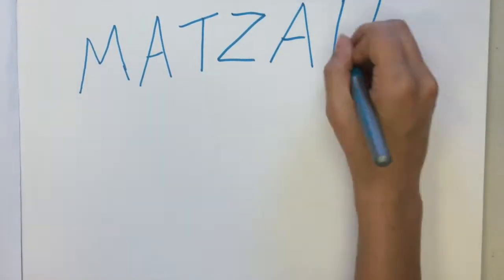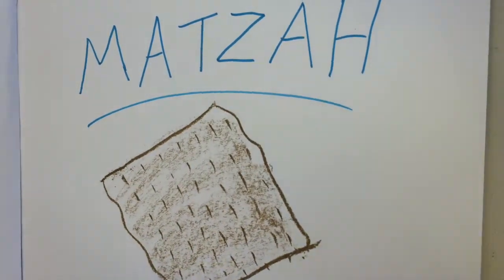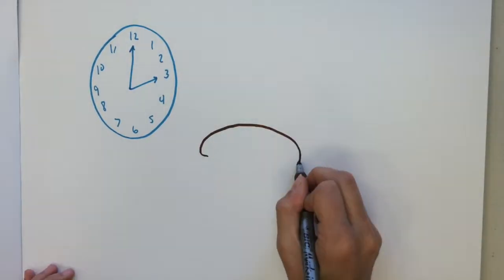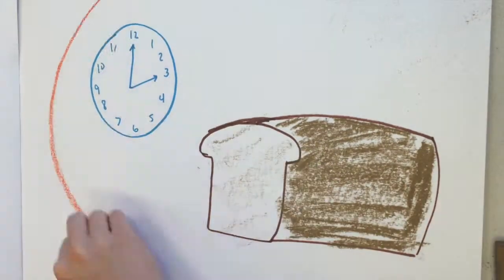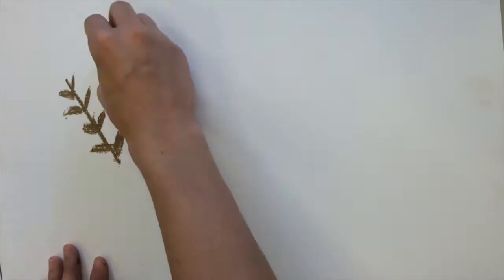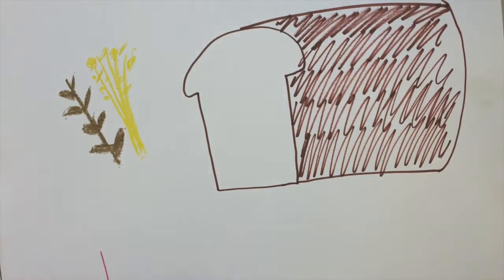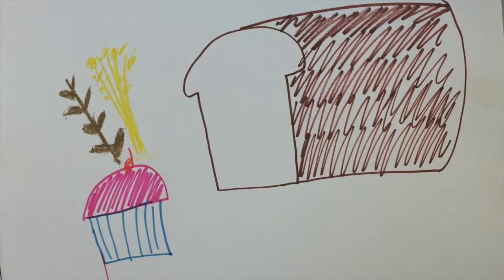Matzah is a special food eaten at Passover. It is kind of like a cracker. It symbolizes that when the Israelites left Egypt, they were in such a hurry that there wasn't time to let the bread rise. Eating matzah is another way to remember the Passover story. During the week Passover is celebrated, Jewish people do not eat any grains or foods that have risen. This includes bread products and baked goods and anything that would rise in an oven.